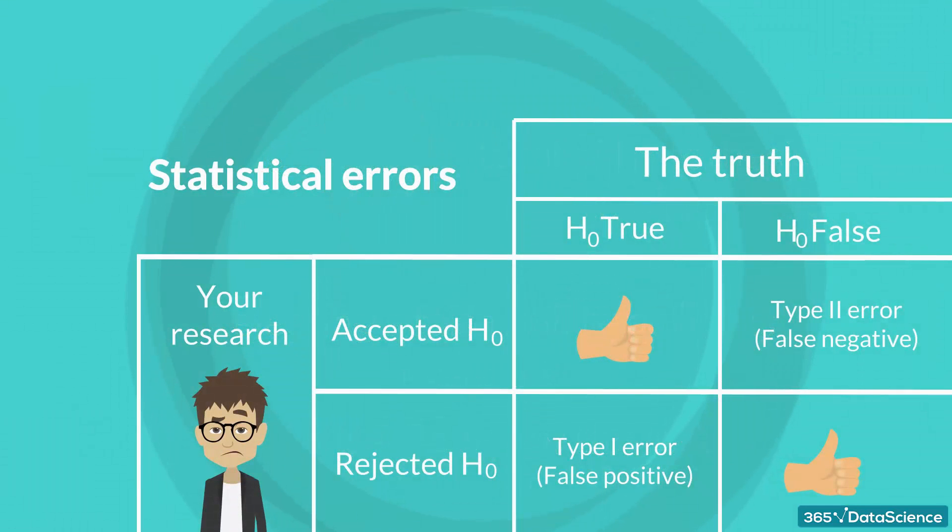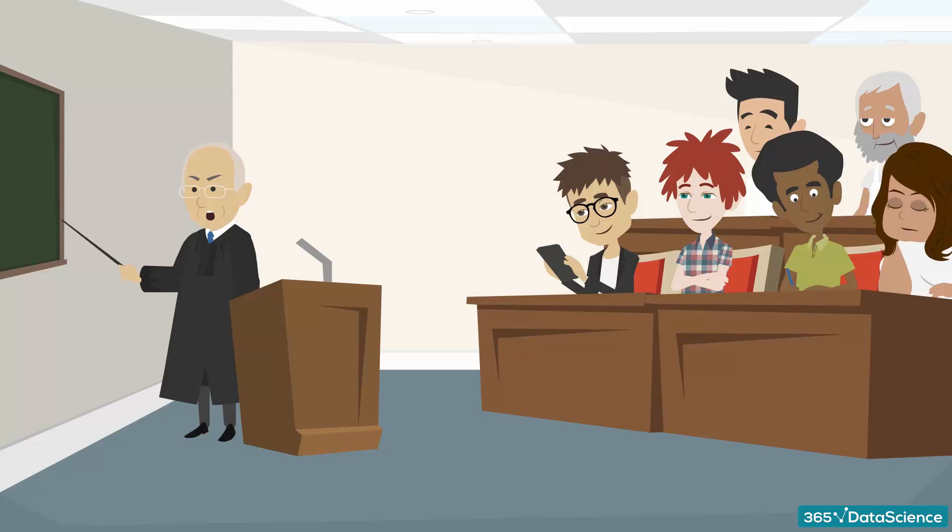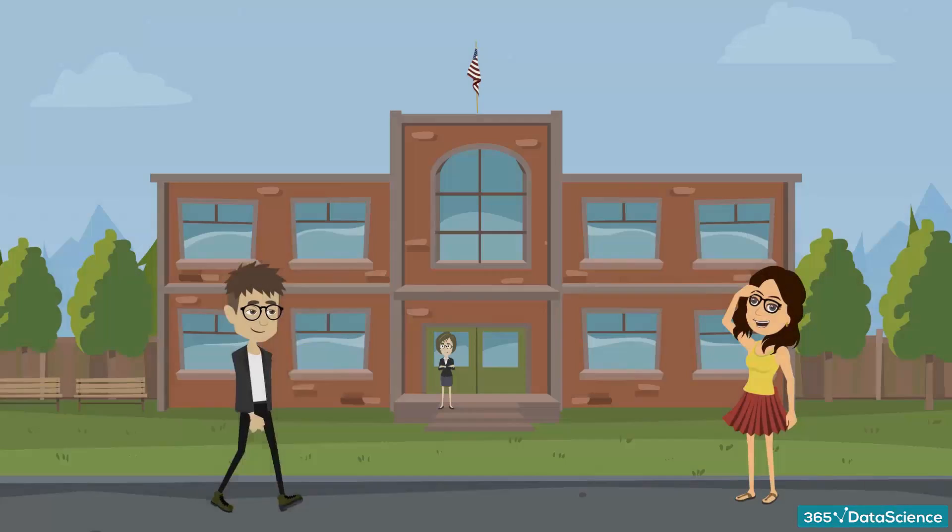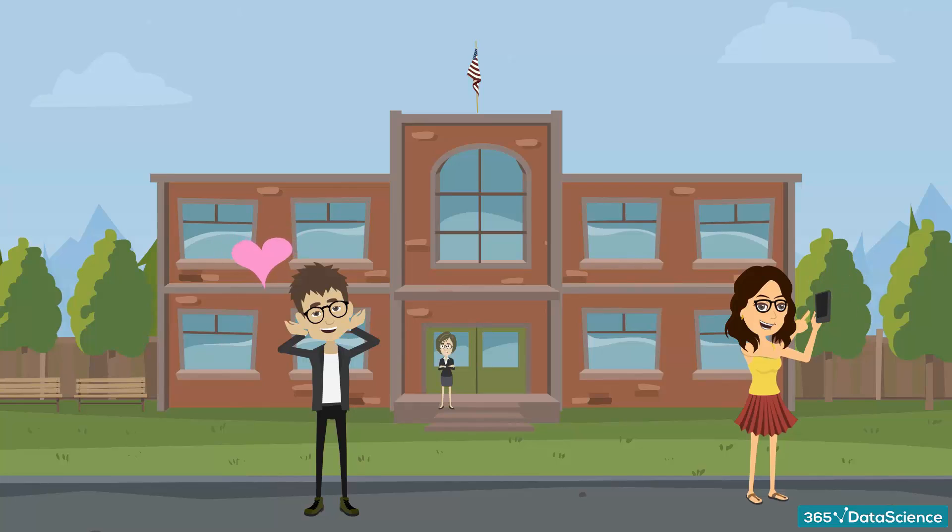This is a common table statisticians use to summarize the types of errors. Now, let's see an example that I heard from my professor back when I was studying statistics in university. You are in love with this girl from the other class, but are unsure if she likes you.